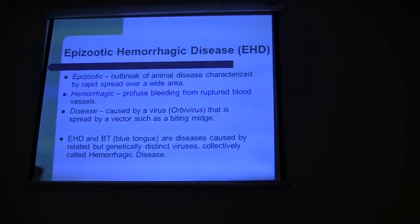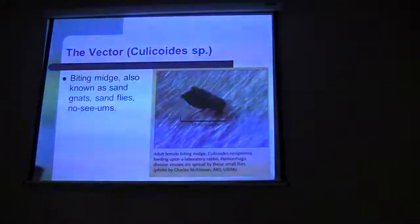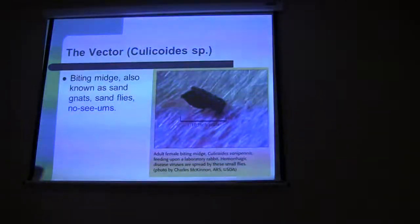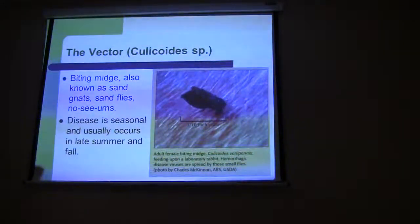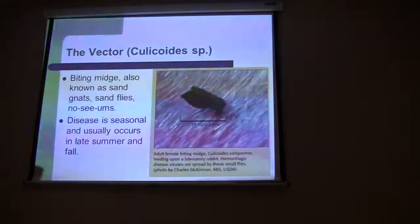EHD and bluetongue are very similar diseases, but they're caused by genetically distinct viruses. We call them collectively hemorrhagic disease. The vector is a biting midge in the Culicoides species — it's a biting fly. Because it is an insect, the disease itself is seasonal, and it usually occurs in late summer, early fall, when we start to see effects of EHD.